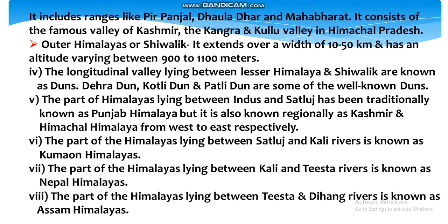The part of the Himalayas lying between the Indus and Sutlej has been traditionally known as Punjab Himalayas, but is also known as Kashmir and Himachal Himalayas from west to east respectively. Satluj evaṃ Sindhu ke bīc isthit Himālaya ke bhāg ko Panjāb Himālaya ke nām se jānā jātā hai. The part between the Sutlej and Kali rivers is known as Kumaon Himalayas, and the part between the Kali and Tista rivers is known as Nepal Himalayas.